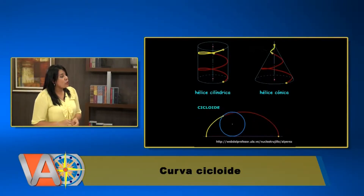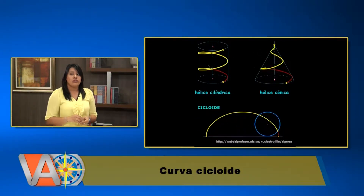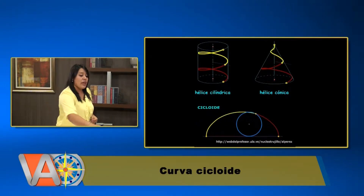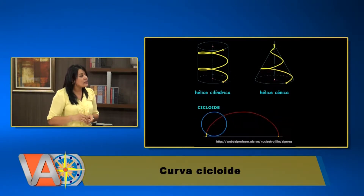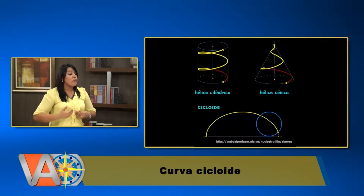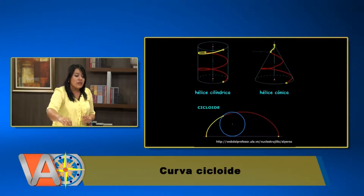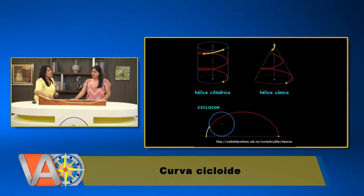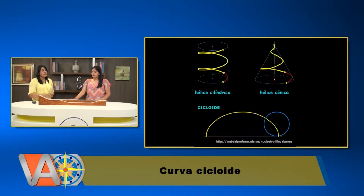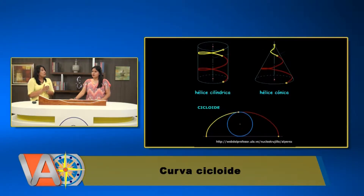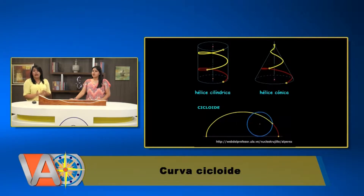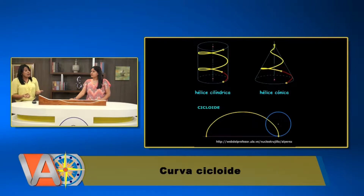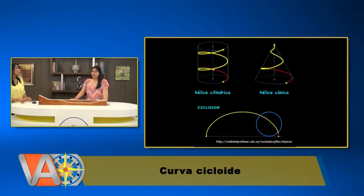Tiempo después, un físico suizo llamado Johann Bernoulli demostró que esta curva cicloide no es exactamente la mitad de un círculo. Para poder encontrar toda la matemática que describe el movimiento de una partícula en una curva cicloide y en una línea recta, tuvo que hacer la invención de un área de la matemática que se llama el cálculo variacional. Las propiedades de la curva cicloide se llaman tautocrona y braquistocrona.